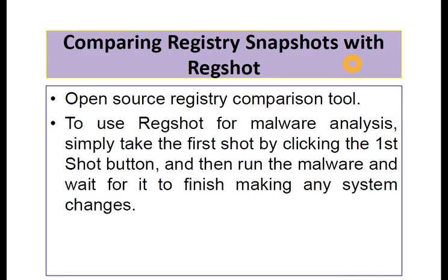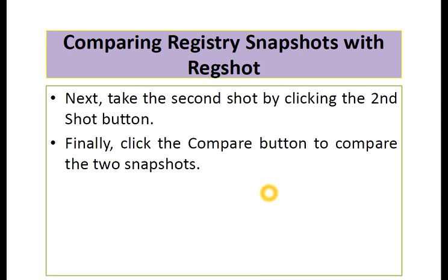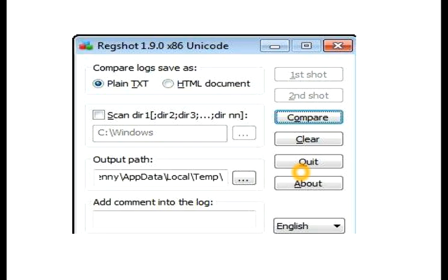This lecture is straightforward. To recap: take the first shot by clicking the first shot button, then run the malware to make some changes to your system, then take the second shot, and then compare.